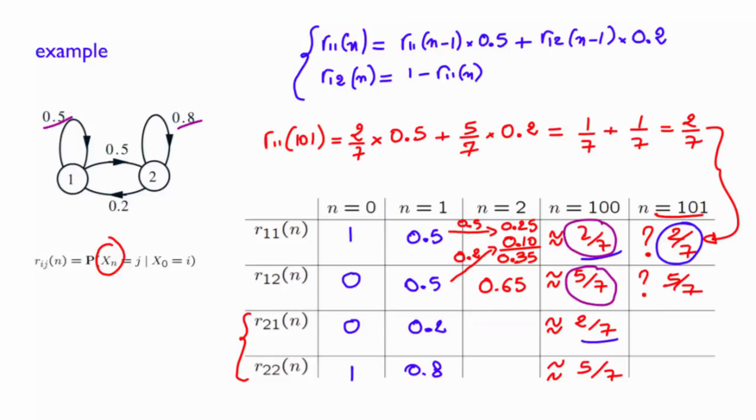So to conclude, this Markov chain has exhibited some nice long-term properties. Is this always the case for any Markov chains? Let us see.